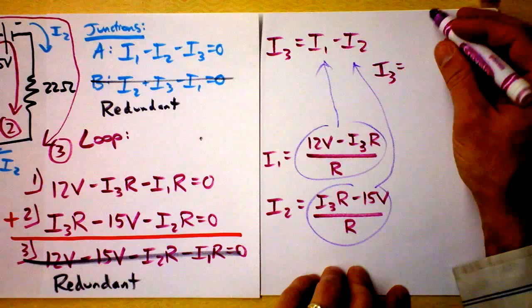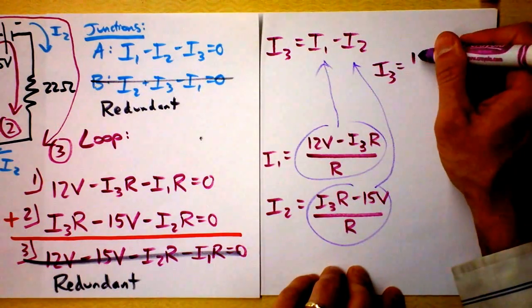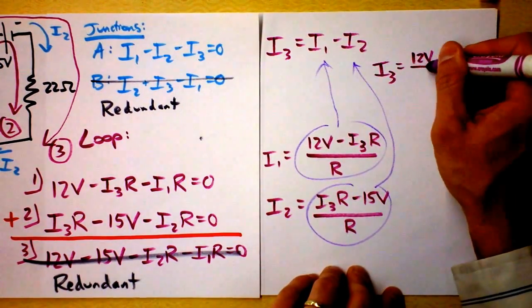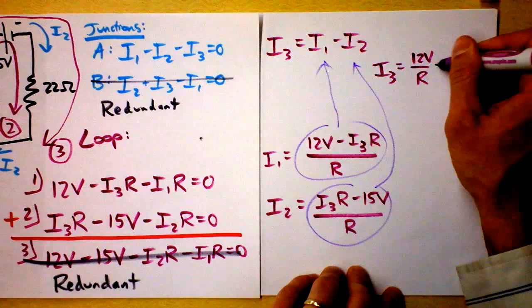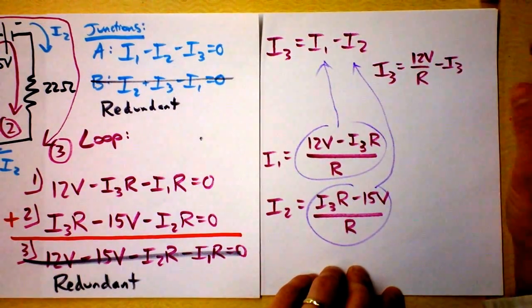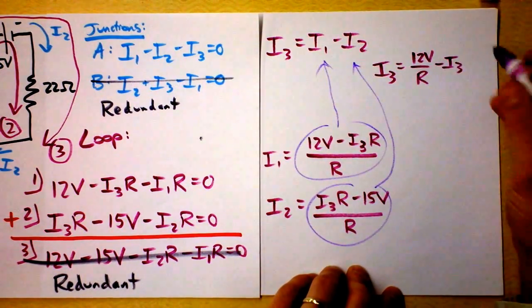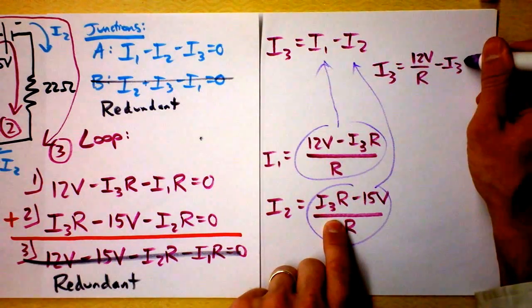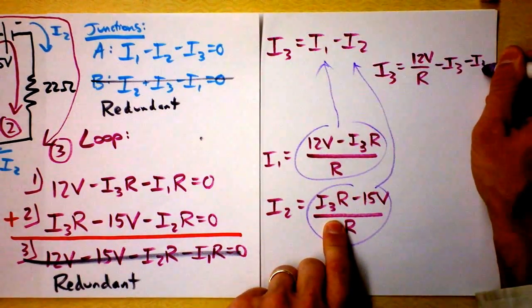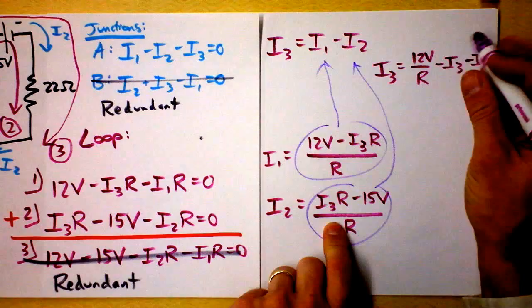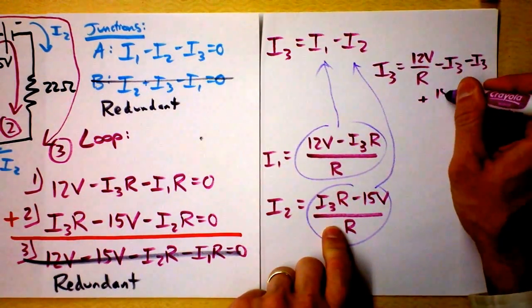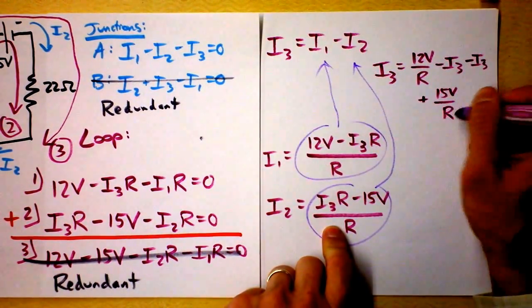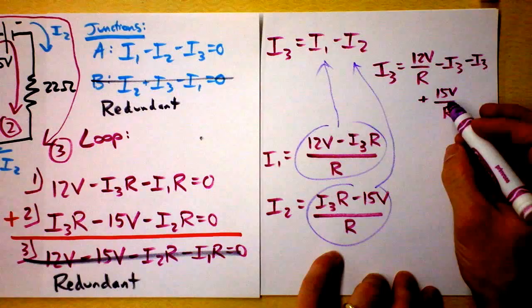I'll just write it like this. I got 12 volts divided by R minus I3. And then I have to continue going this way except I'm going to subtract. And that says minus I3. And then I add plus 15 volts divided by R. Now, if you look at all this mess right here, it looks like I've got two I3s over there.